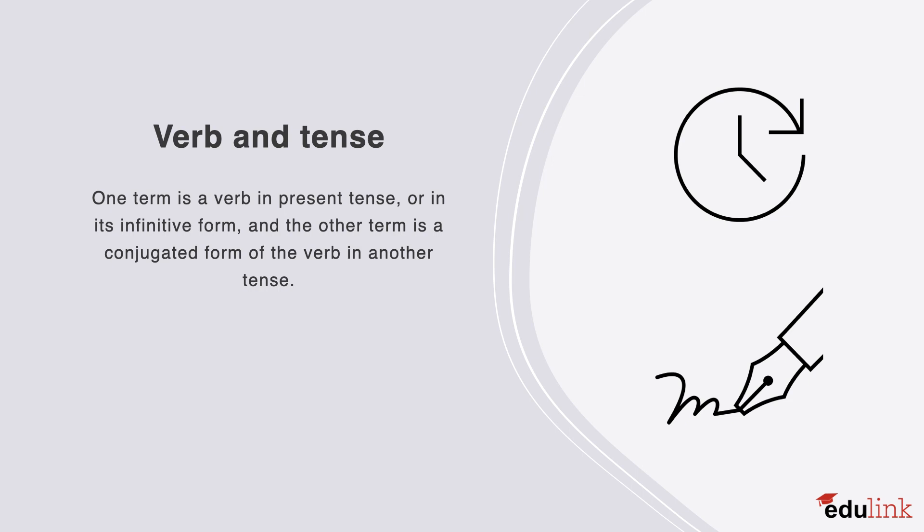Another relation type is verb and tense. This is where one term is a verb in present tense, or in its infinitive form. And the other term is a conjugated form of the verb in another tense. For example, fly and flew. Fly is in the present tense, or in the infinitive form. And flew is in the past tense. The same as with come and came, and also the same with keep and kept.